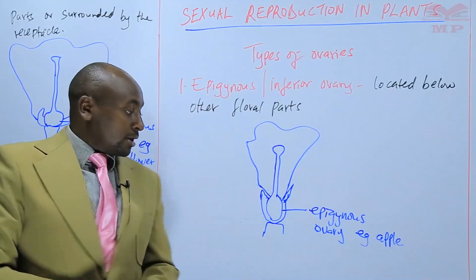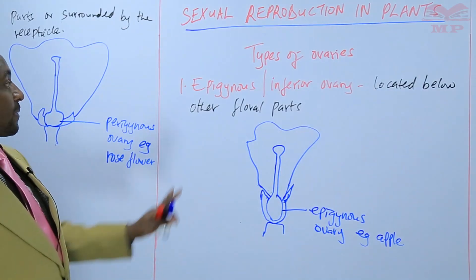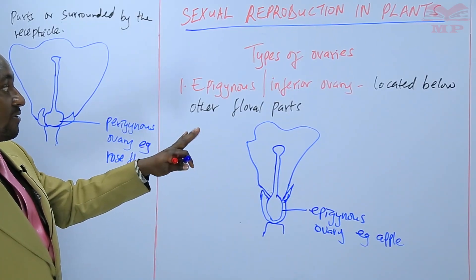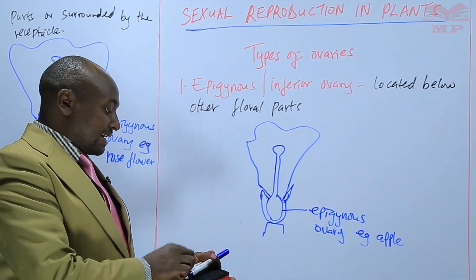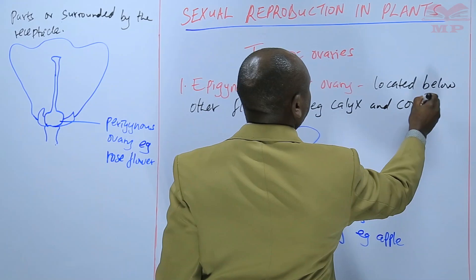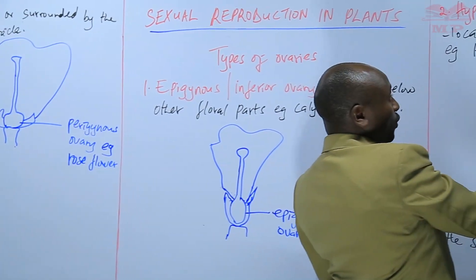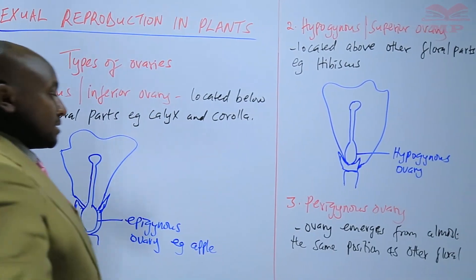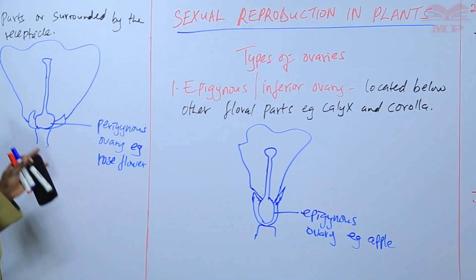Those are the three types of ovaries that we have. We shall see more terms that are used to describe the flower, but this section is just describing the types of ovaries. Epigynous or inferior is located below other floral parts such as the calyx and corolla. We have the hypogynous ovary — it's superior, located above the other floral parts. Then we have the perigynous ovary, where it is almost at the same position as the other floral parts, occurring within or surrounded by the receptacle.